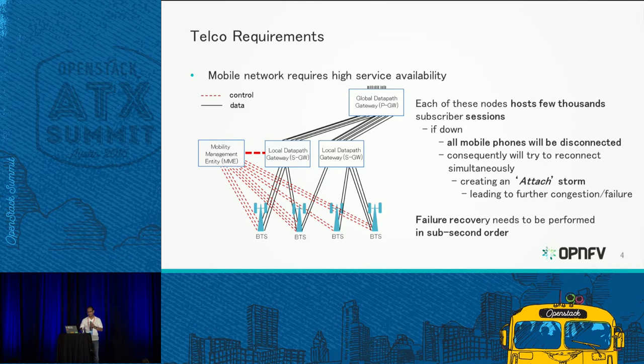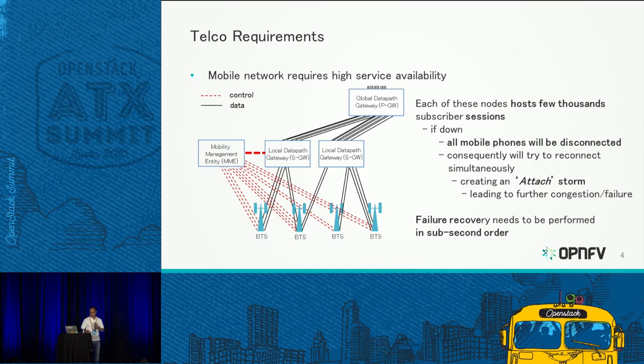Each of these nodes hosts a few hundred to a few thousand subscriber sessions. If one goes down, thousands of customers lose network connection. Consequently, all those cell phones try to re-register to the network simultaneously, and these nodes cannot take that load. This gets into an irrecoverable scenario where a single fault will not allow the network operator to recover the node. What we require is very fast failover policy.